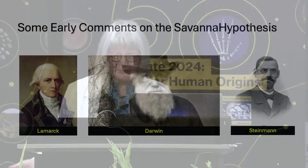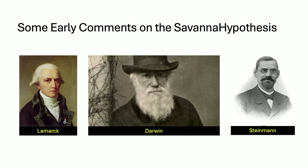Charles Darwin never specifically mentions grasses, but he talked about bipedalism needing a selective advantage. He did say that whatever that habitat was, bipedalism occurred in Africa. Then Steinmann, a geologist, talked about bipedalism in an open Savannah causing our brain to grow and giving us better use of our hands — as if when we walked out onto the Savannah, we became human immediately. But all these were pretty early thinkers.